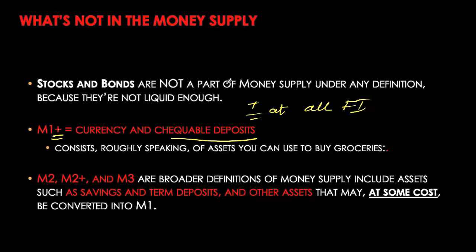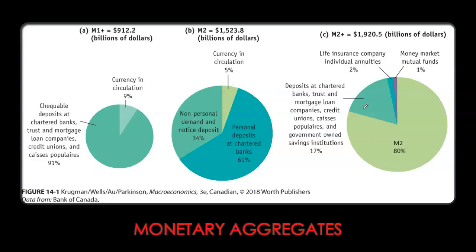Looking at M1+, M2, and M2+ in comparison: M1+ is the narrowest, containing currency and checkable deposits at all types of financial institutions. M2 builds upon M1+ but covers checkable deposits at chartered banks only — note there is no plus sign — and since it's broader, it also includes non-personal demand and notice deposits. M2+ is even bigger than M2: it includes everything in M2 plus similar deposits at other financial institutions, money market mutual funds, and life insurance company individual annuities. As we move from narrower to broader aggregates, more and more near monies are added.